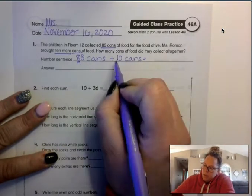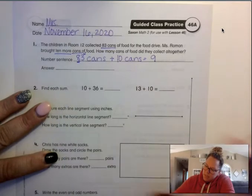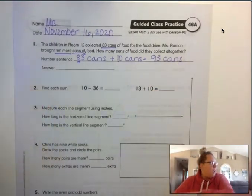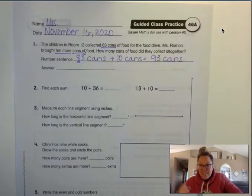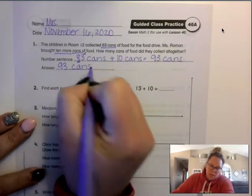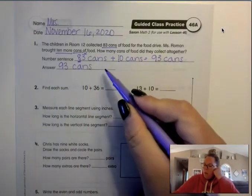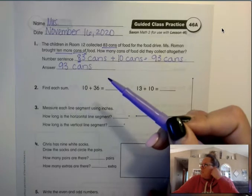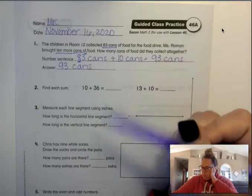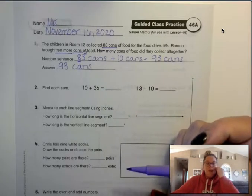Well, what's 10 more than 83? Remember, I can take this number here and add one more, and this 3 stays the same. So I have 93 cans. Go ahead for your answer and write 93 cans. I'll give you just a minute to get that done. 83 cans plus 10 cans equals 93 cans.